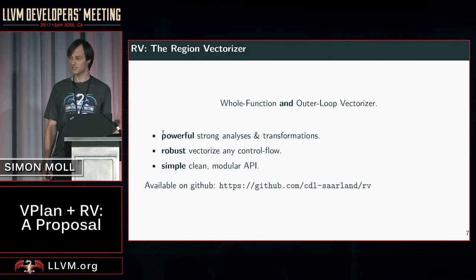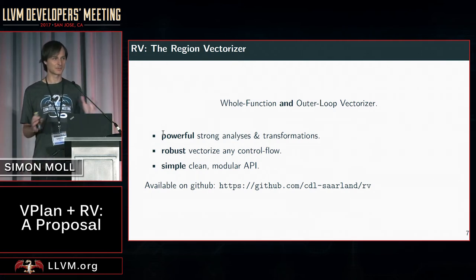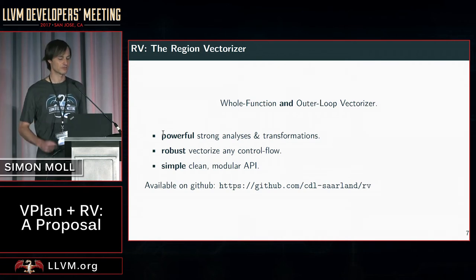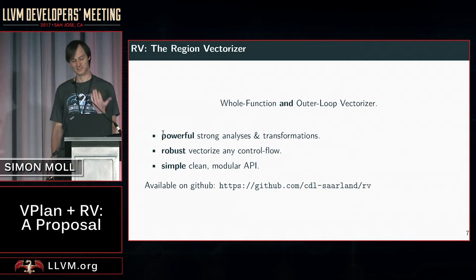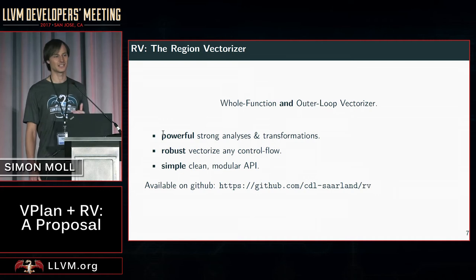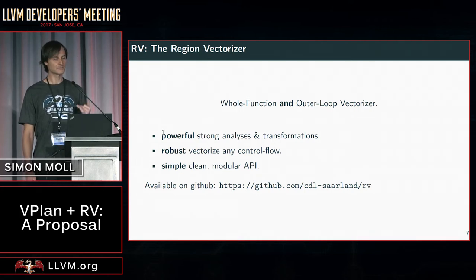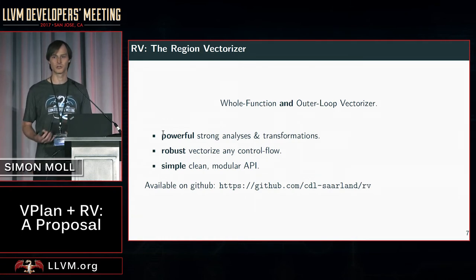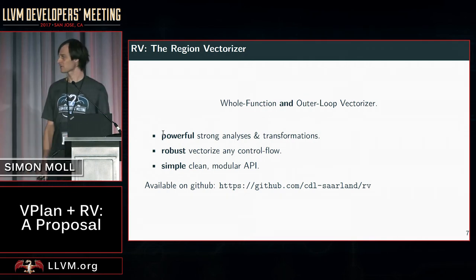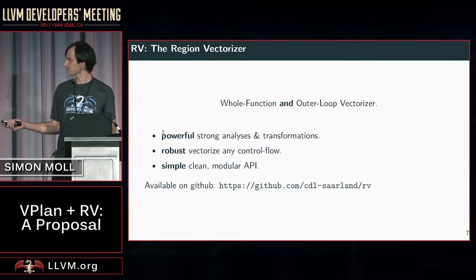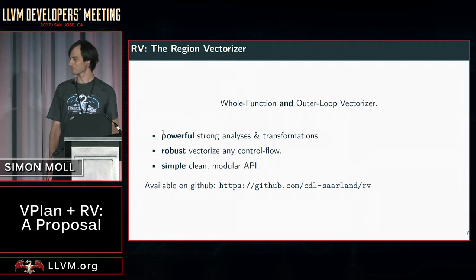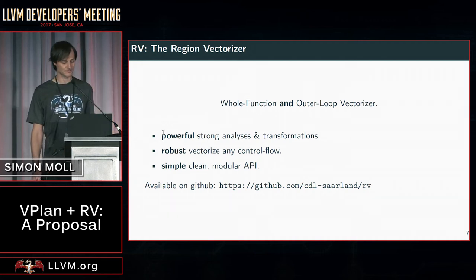The region vectorizer, or RV as we call it, actually already supports outer loop vectorization and whole function vectorization natively — so it might be interesting to look into that. RV is a whole function and outer loop vectorizer, but it's not two separate pipelines — it's one pipeline that does both. It has strong analysis transformations, it's designed to be robust, and as a research project we wanted to be able to vectorize any control flow. We want a clean, simple, modular API for experimenting with different vectorization schemes. It's open source since last year on GitHub and supports LLVM 4.0, with 5.0 and upstream master support coming.